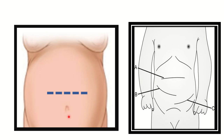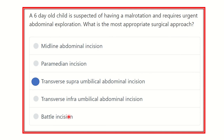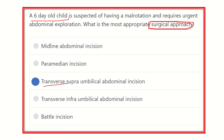Our final answer is the transverse supraumbilical incision. For a six-day-old child, for a better surgical approach, better outcome, and exploration to gain access, a transverse supraumbilical abdominal incision should be given.